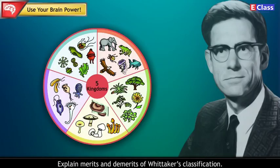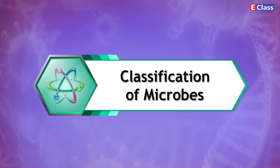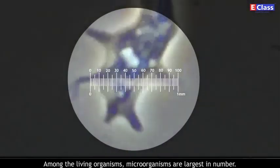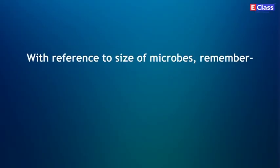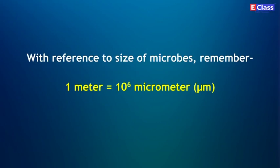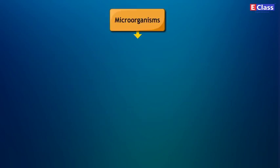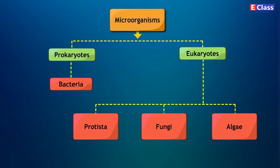Explain the merits and demerits of Whittaker's classification. Classification of Microbes: Among living organisms, micro-organisms are the largest in number, hence they are classified as follows. With reference to size of microbes, remember: 1 meter = 10⁶ micrometers; 1 meter = 10⁹ nanometers (nm). Micro-organisms are divided into Prokaryotes (Bacteria) and Eukaryotes (Protista, Fungi, Algae).